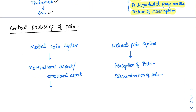How is pain centrally processed — how do we understand whether it is a pricking or crushing type of pain? This happens through two systems: the medial pain system and the lateral pain system. The lateral pain system is very important. It causes perception of pain and discrimination of pain. Perception happens at the level of the thalamus itself — not the somatosensory cortex as many think. Discrimination of pain quality is done at the somatosensory cortex.